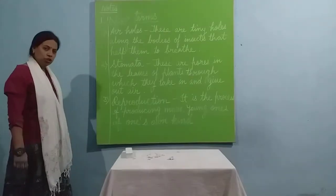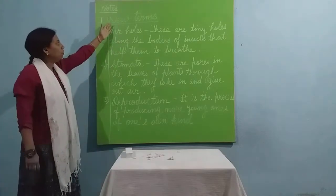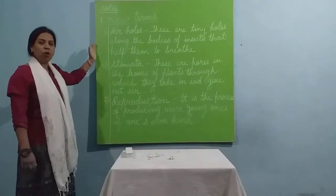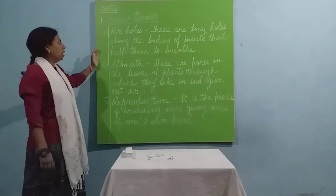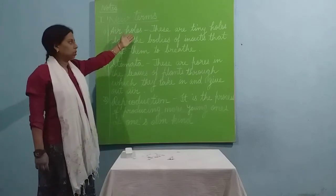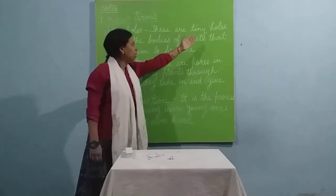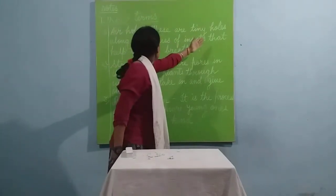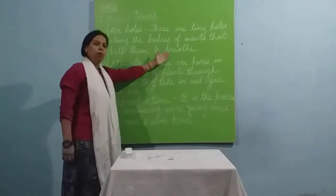Children, these are a few new terms which you came across while explanation of the chapter. And I would like you to know the meaning of these new terms. Air holes. These are tiny holes along the bodies of insects that help them to breathe.